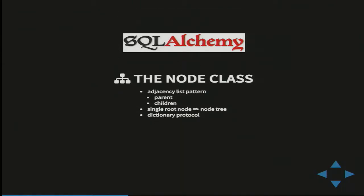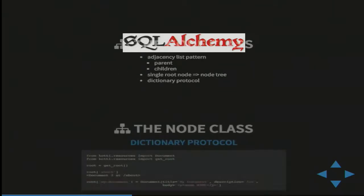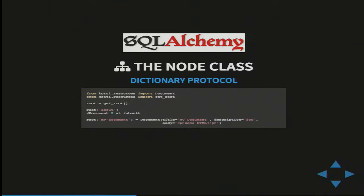What COTI does is implement a node class in pure SQLAlchemy that implements what we had with the object file system in Zope. It follows the adjacency list pattern, which means every node in the tree knows about its parent and its children. There is obviously a single root node — the one which doesn't have a parent. The node class also supports the dictionary protocol, which means you can treat any instance of the node class as a kind of dictionary and get items by their name and key — meaning get children by their name. This code here is actually working code in COTI, which allows you to get a child of the root element or to add a new child to the root of type document.